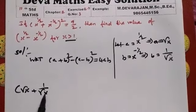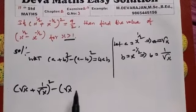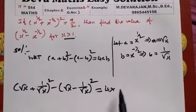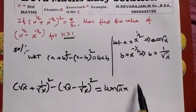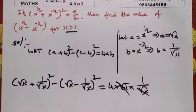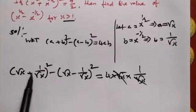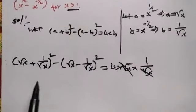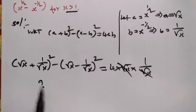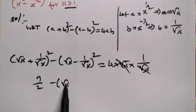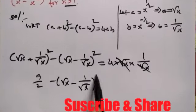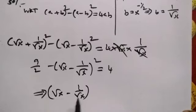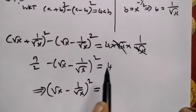Substituting a equal to root x and b equal to 1 by root x: (root x + 1/root x)² minus (root x − 1/root x)² equals 4 into ab, which is 4 into root x into 1/root x. The root x cancels, giving 4. Since the given value of (root x + 1/root x)² is 9/2, we get: 9/2 minus (root x − 1/root x)² equals 4.